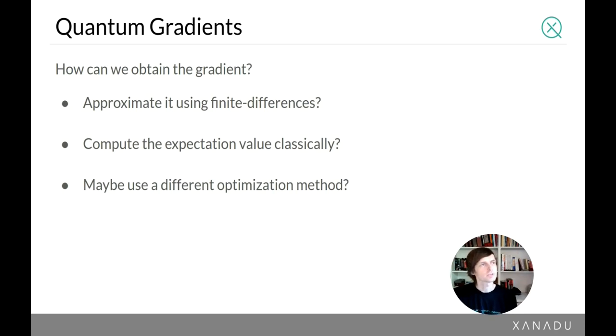One thing you could say is let's not compute the gradient, let's just approximate it using some agnostic method like a finite difference estimator. Another thing you could do is say let's just do everything classically, let's write a simulator of our circuit classically and use machine learning tools that are classically available to compute the gradients automatically. Or you could say maybe this is too much trouble, maybe we should just avoid using gradient descent and we should try some other optimization strategy.